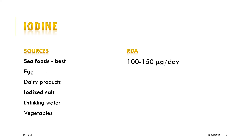Seafood is the best or richest source of iodine. Apart from that, we have iodized salt — that is fortification of salt — which is a very important source of iodine. Drinking water, vegetables, egg, and dairy products also have iodine content. The recommended allowance is 100 to 150 micrograms per day.